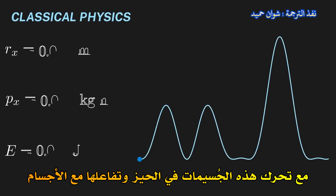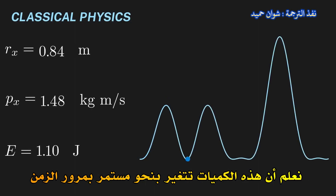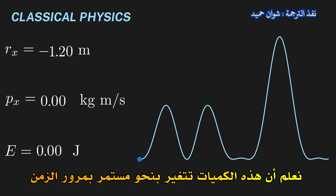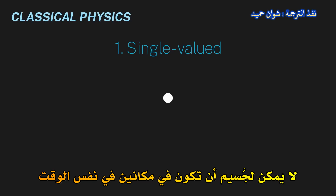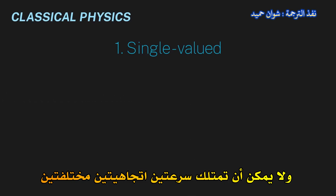First, let's review the basic mathematical model we have for classical physics. We know that a classical particle carries with it physical quantities like position, momentum, and energy. As this particle moves in space and interacts with objects, we know that these quantities change continuously in time. We know that classical physical quantities are single-valued, meaning they only take on one value at any one time. So, for example, a particle can't be in two places at once, and it can't have two different velocities.